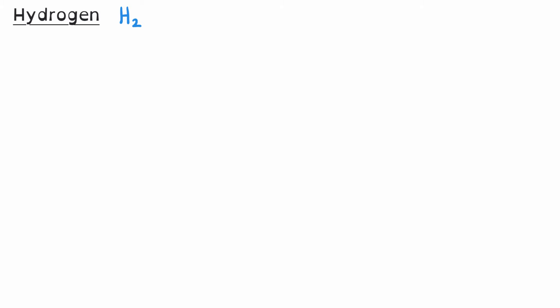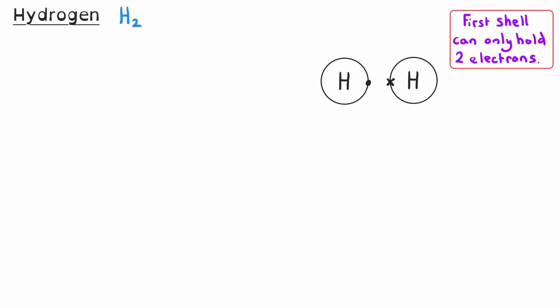Hydrogen is a small covalent molecule with the formula H2, meaning it's made up of two atoms of hydrogen. Hydrogen is in group one of the periodic table, so it has one electron in its outer shell, and for that to be a full shell it needs two electrons. We show one atom of hydrogen with its electron as a dot, and another with its electron as a cross.